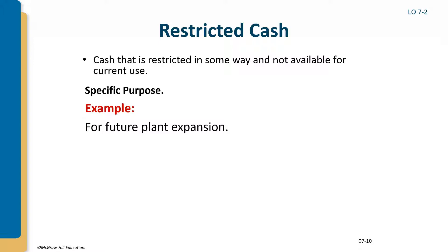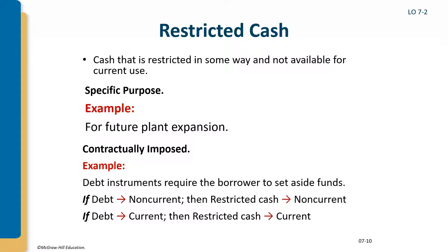Sometimes cash is restricted for certain purposes, like a future plant expansion or something contractually imposed — a debt or loan agreement may require the company to set money aside. If the debt is non-current and the money set aside will be reported as a non-current restricted cash asset, usually in the long-term investment area. If the requiring debt is short-term or current, the restricted cash is listed in the current asset section. The key point is it's not included with normal cash.